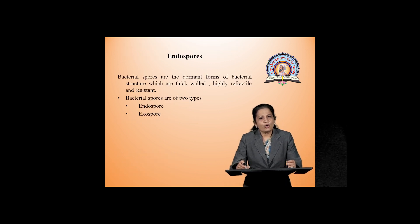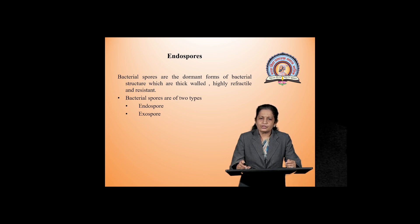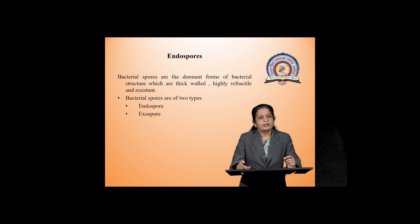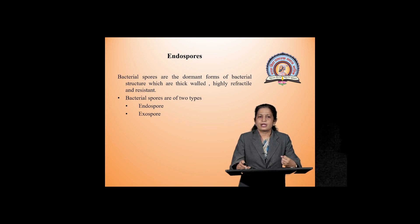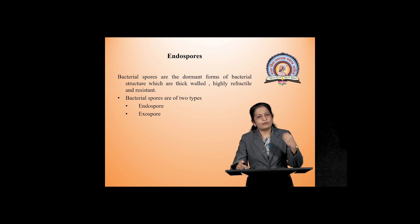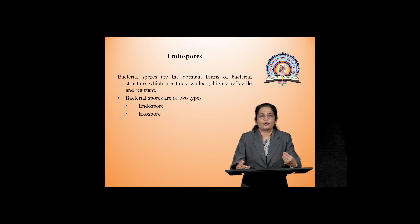Endospores are the dormant forms of the bacterial structure. These endospores have a thick wall. The endospore is a very refractile body. When we observe them under the microscope, it emits light — meaning it is refractile — and these endospores are highly resistant to normal conditions which vegetative cells cannot tolerate.